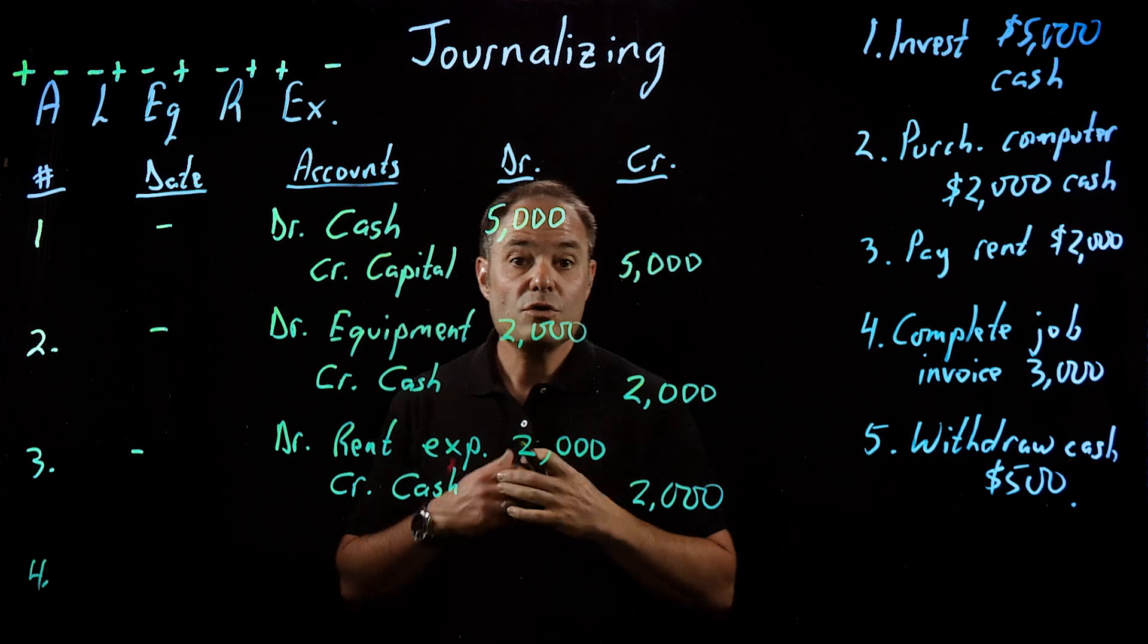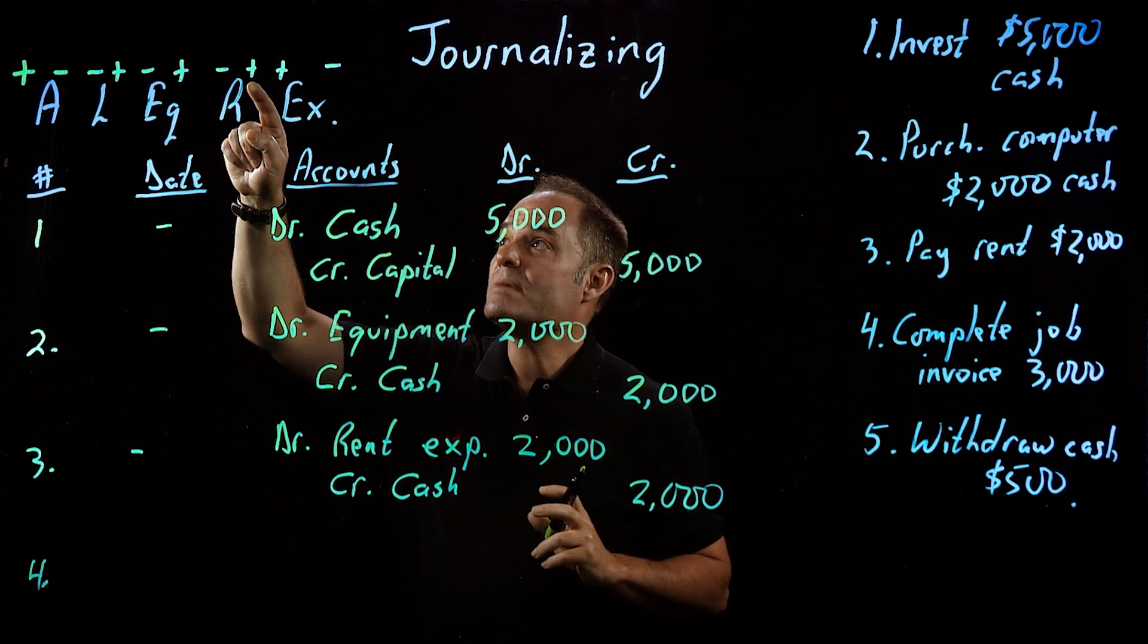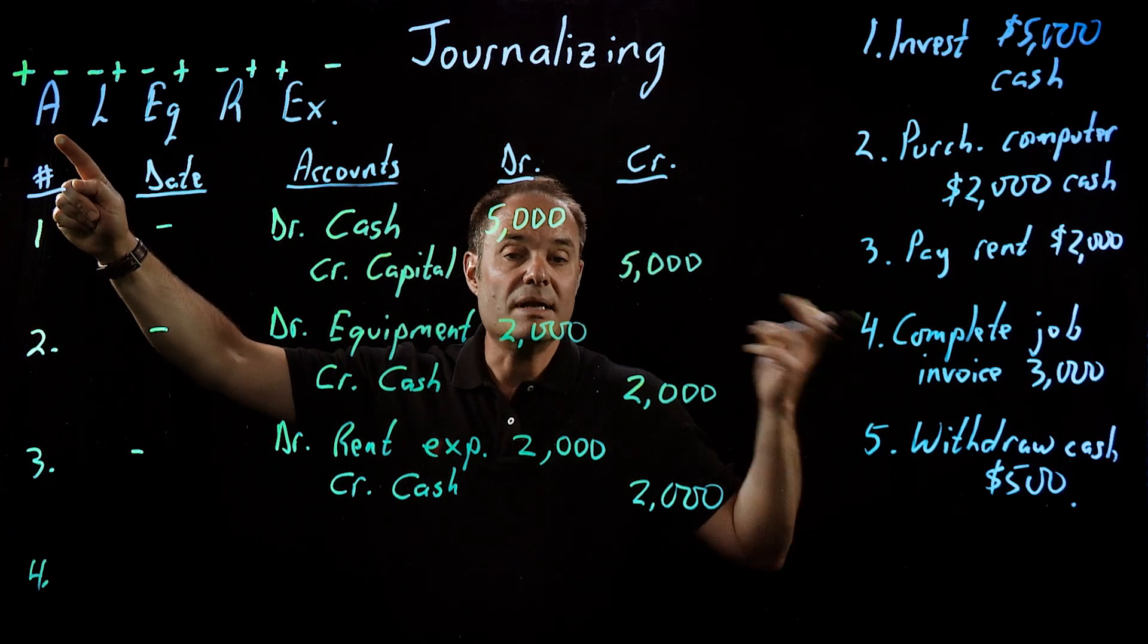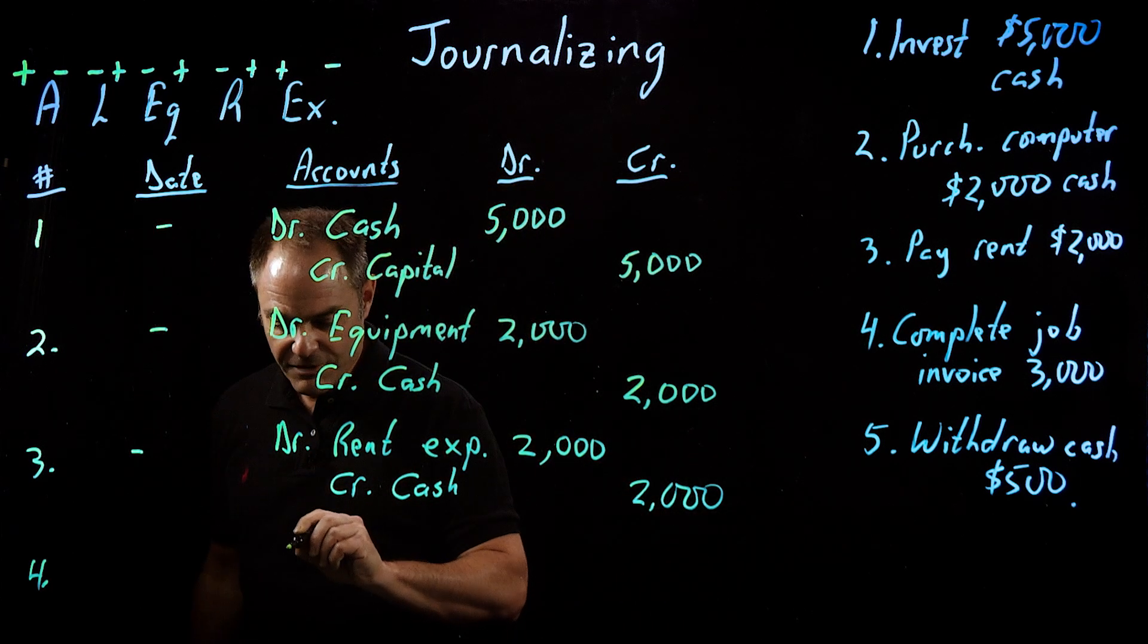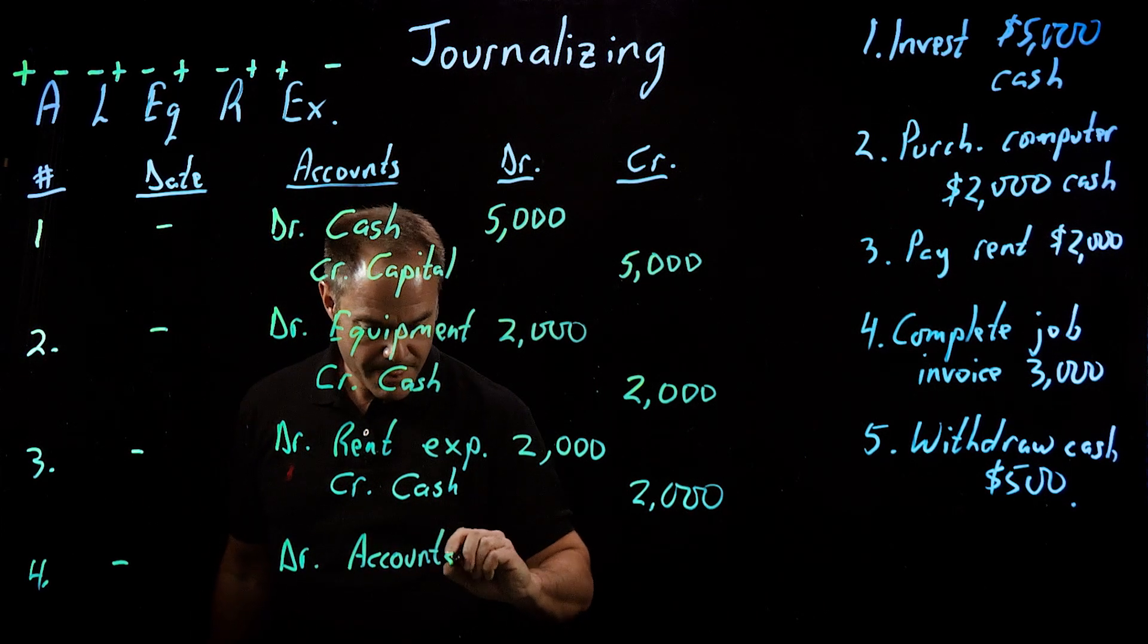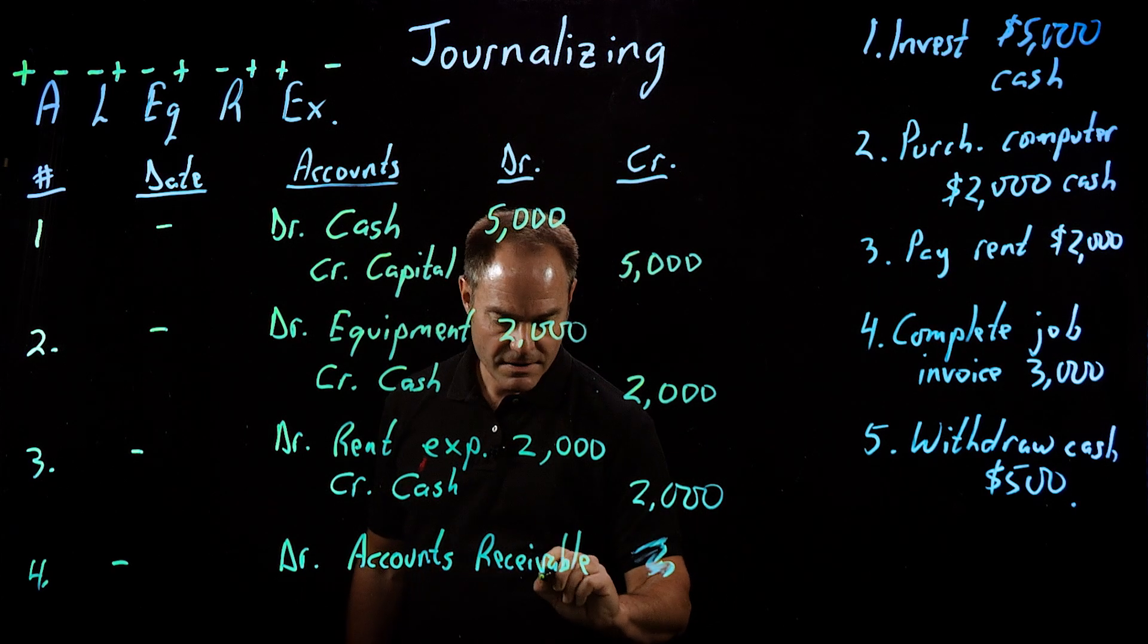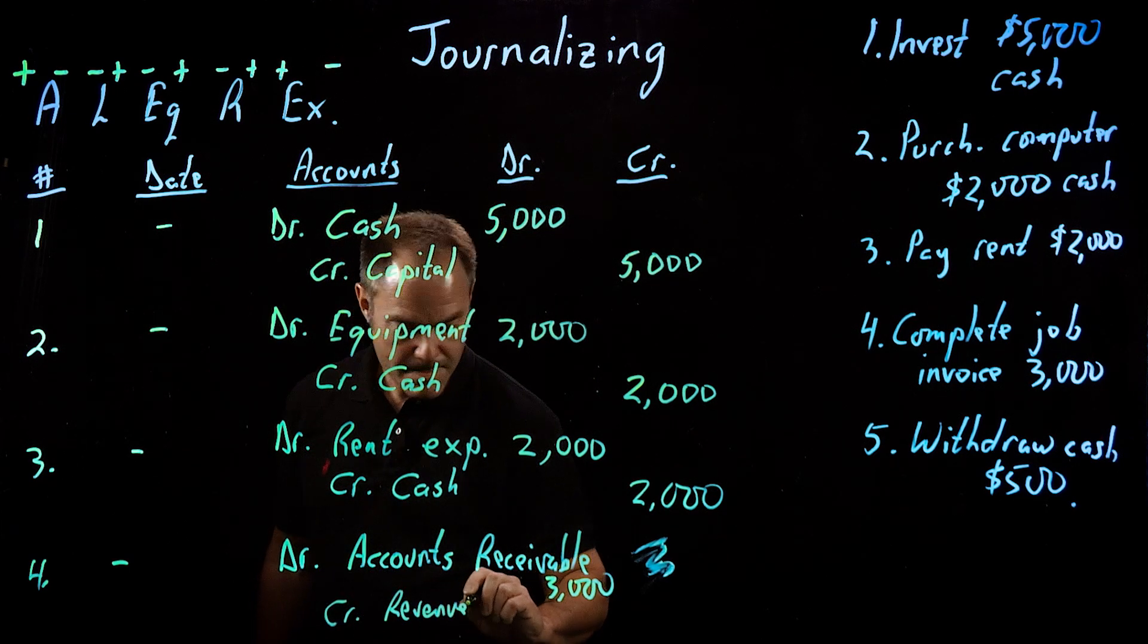Complete the job and invoice $3,000. We've completed the job, we've earned revenue, and we'll talk more about how we earn revenue later. If I've earned revenue, my revenue's increased. That's on the right-hand side, so it's a credit. Because we have to write the debit first, in addition to earning revenue, I also have an asset. I have an account receivable. I'm owed $3,000. Assets have increased, so it's a plus on that side, so it's a debit. We'll put the debit first. I'm going to debit accounts receivable, and that was $3,000. It goes over here, and I'm going to credit revenue, and that goes over here.